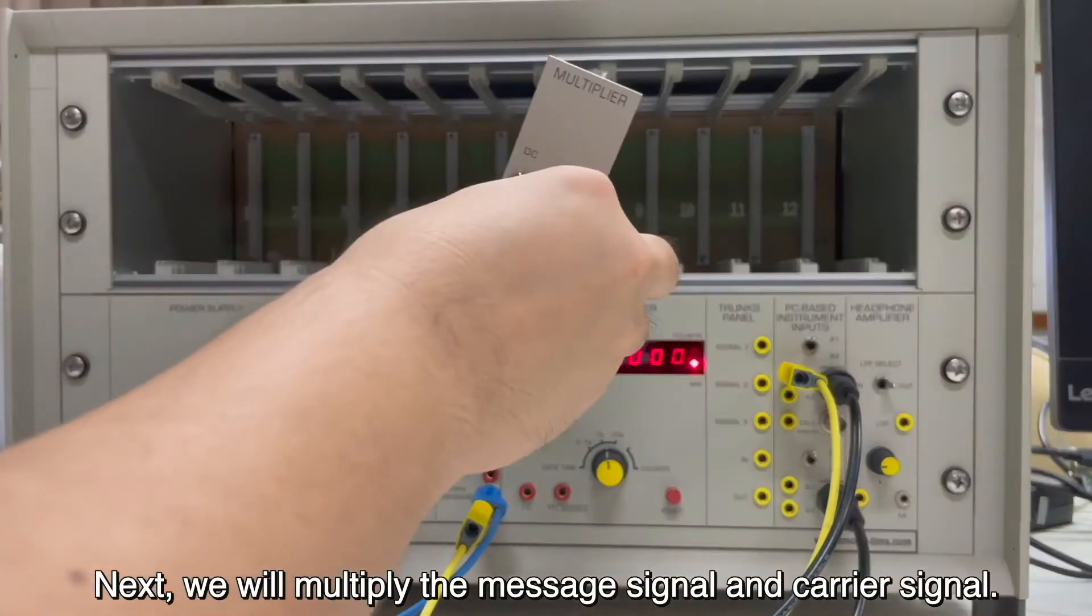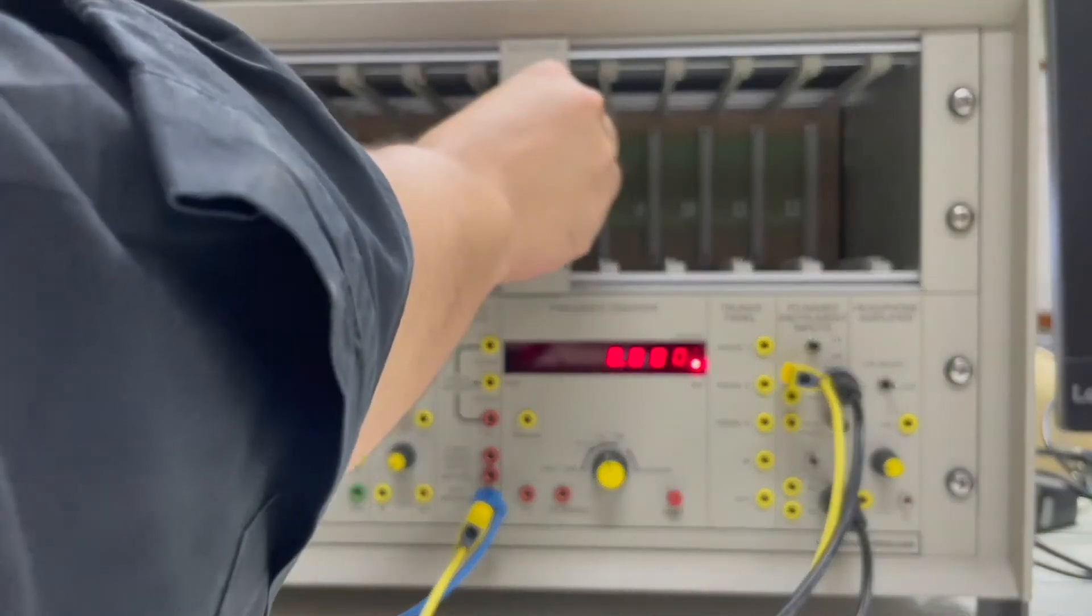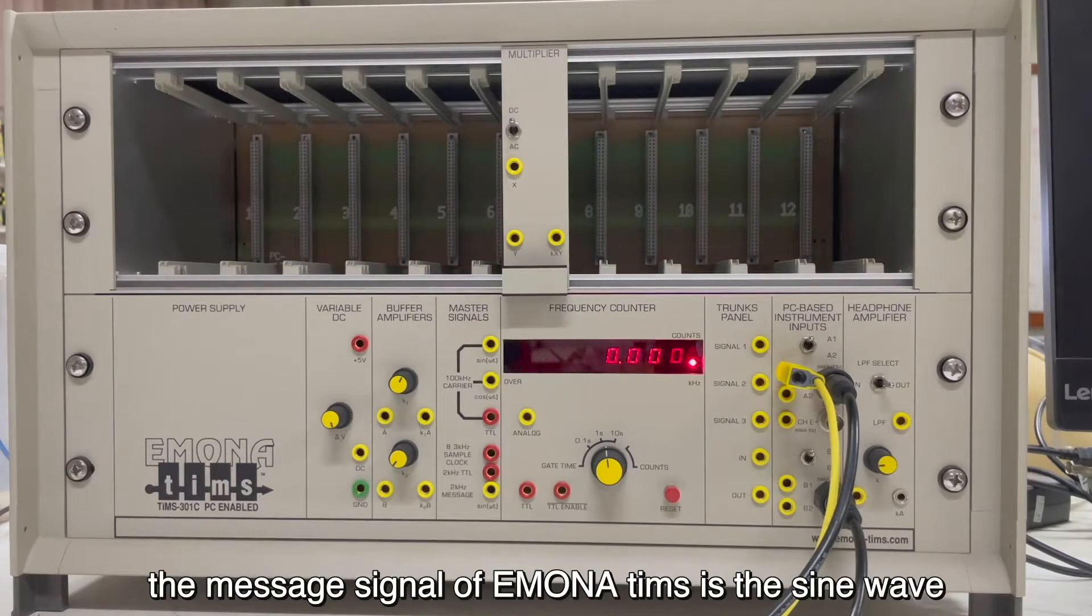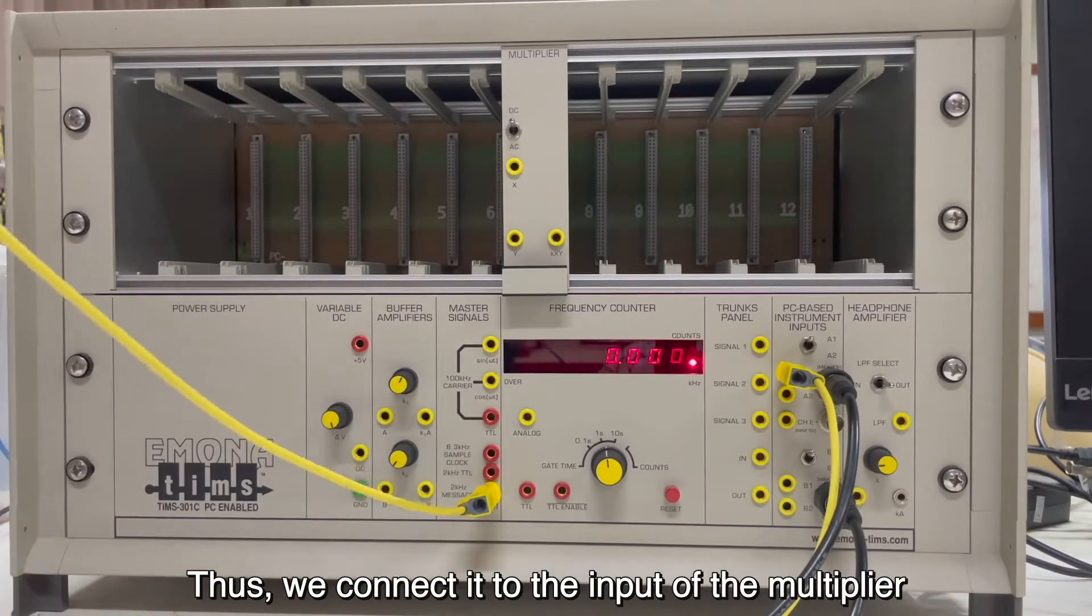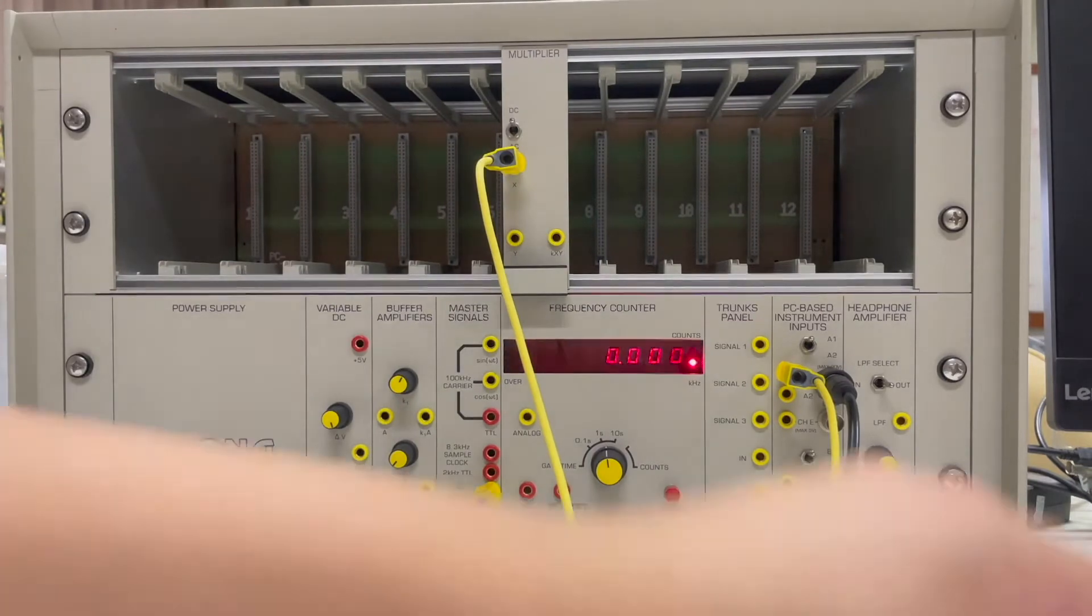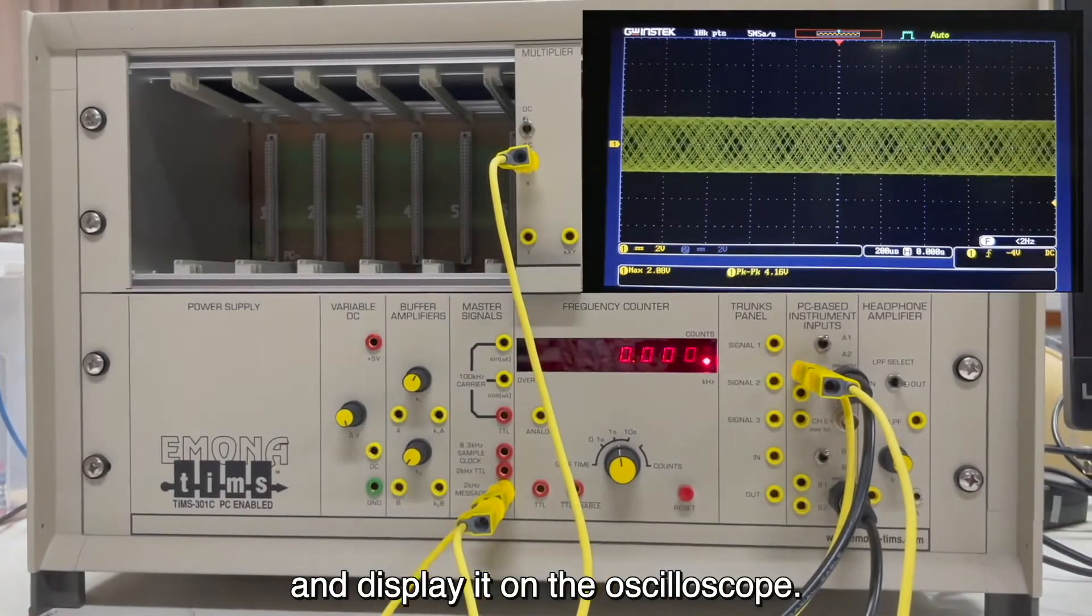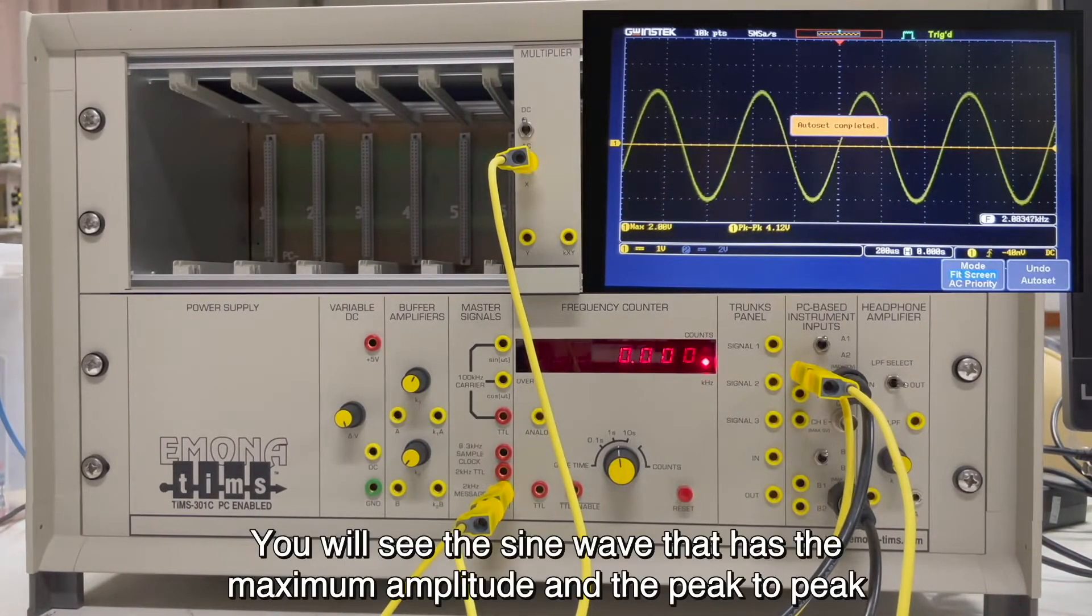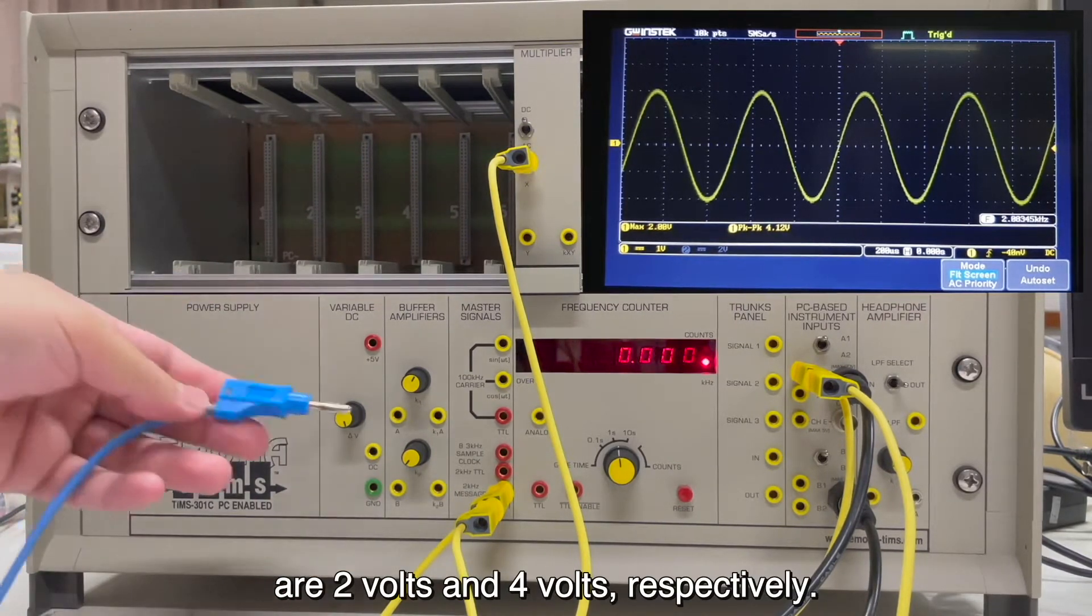Next, we will multiply the message signal and carrier signal. You will see that the message signal of EMONA TIMS is a sine wave that has a frequency of 2 kHz. Thus, you connect it to the input of the multiplier and this page is on the oscilloscope.